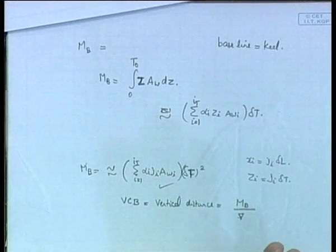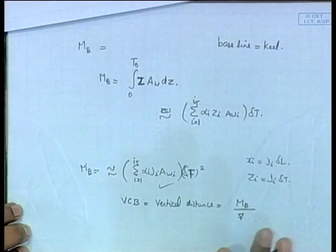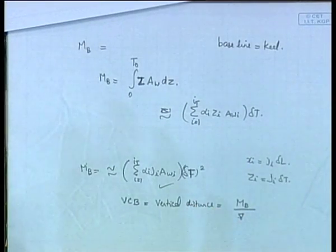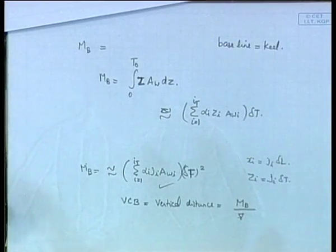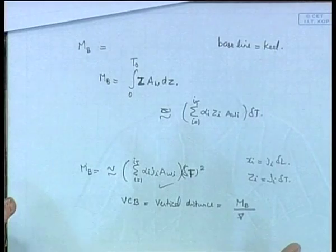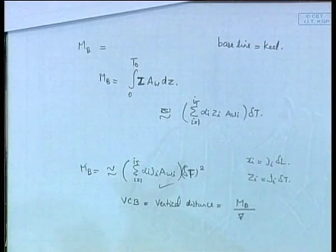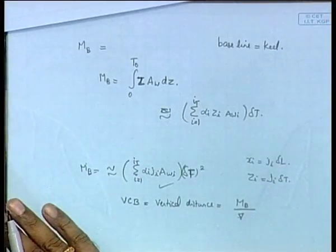So we have covered all the main hydrostatic calculations: computing moments, moments of inertia (second moments), areas, and from these deriving LCF, VCB, and related quantities about the origin, baseline, and barycentric axis.